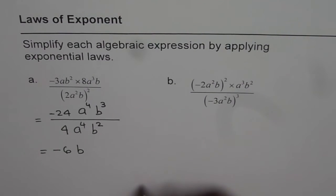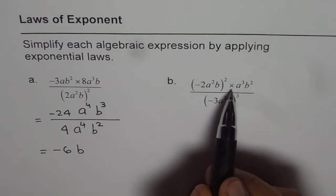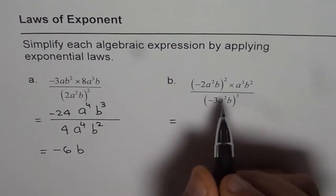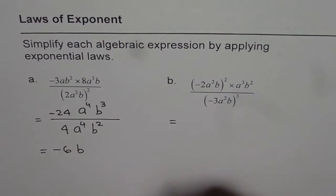Let's do the next one. Minus 2 a squared b whole square times a cubed b squared divided by minus 3 a squared b whole cube. Now, let me show you steps separately. In this, I have combined the steps.